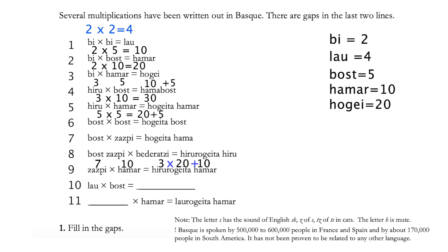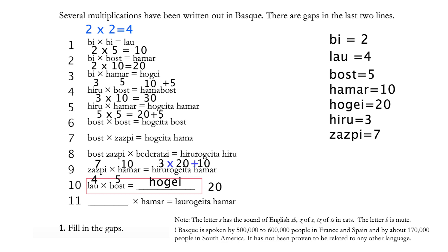To make it a multiple of 10, the only way is 3 times 20 plus 10, which gives you 70. Therefore 'zazpi' must be 7, knowing that 7 times 10 equals 70. Moving on to equation 10, we can easily solve it because we know 'lau' is 4, 'bost' is 5, and the answer must be 20. Be careful not to add the 'ta', because remember it only serves to connect but has no real meaning. Going back to equations 7 and 8, we can tell that it is 5 times 7 equals 35 and 7 times 9 equals 63.